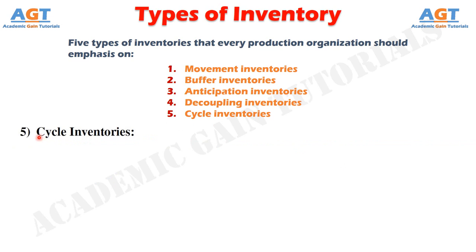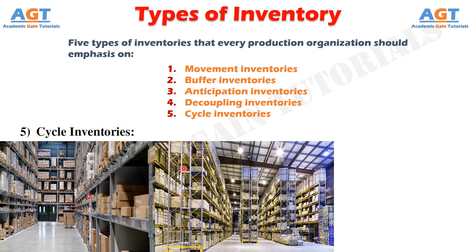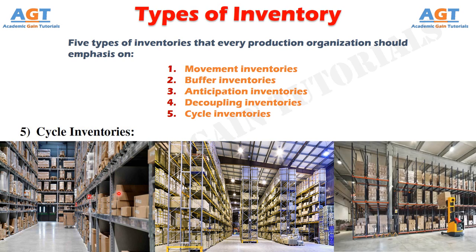Number 5: Cycle Inventories. Cycle inventories are those when purchases are made in lots instead of in the exact amount of stock needed at a specific point of time. If all purchases were made as per the exact requirement of stock, there would be no cycle inventories, but then the cost of getting those stocks would be much higher. They are also called lot size inventories, and the larger the lot size inventory, the greater would be the level of cycle inventory.